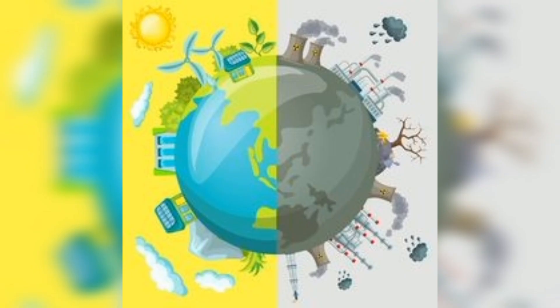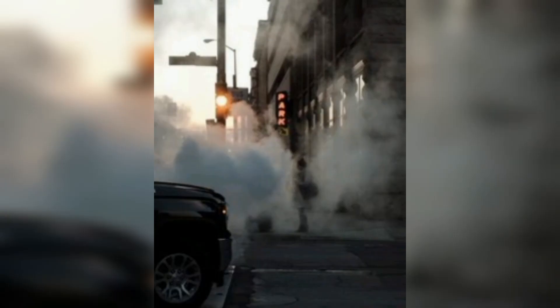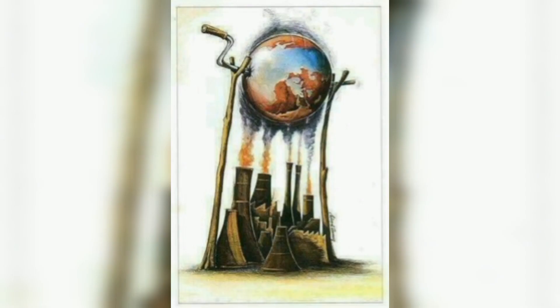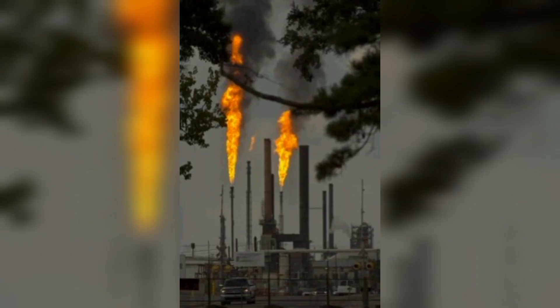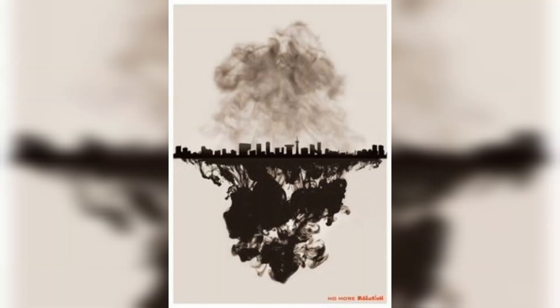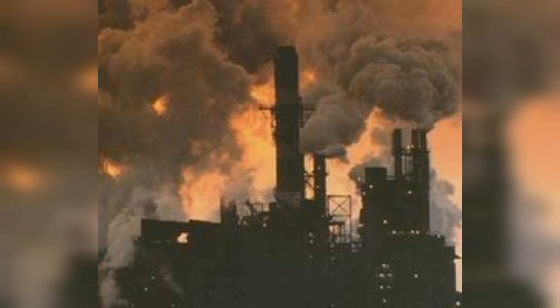For example, acid rain, which is caused by the emissions of sulfur dioxide and nitrogen oxides, can damage forests, lakes, and other natural habitats. Ozone depletion also harms the environment as it leads to increased UV radiation and depletion of the ozone layer. Additionally, air pollution can contribute to climate change, as it is a major source of greenhouse gas emissions.